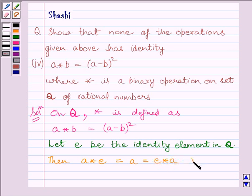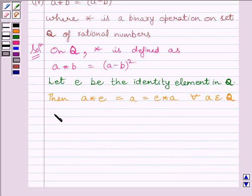We know A star E is equal to A minus E whole square, which must be equal to A by this equation.